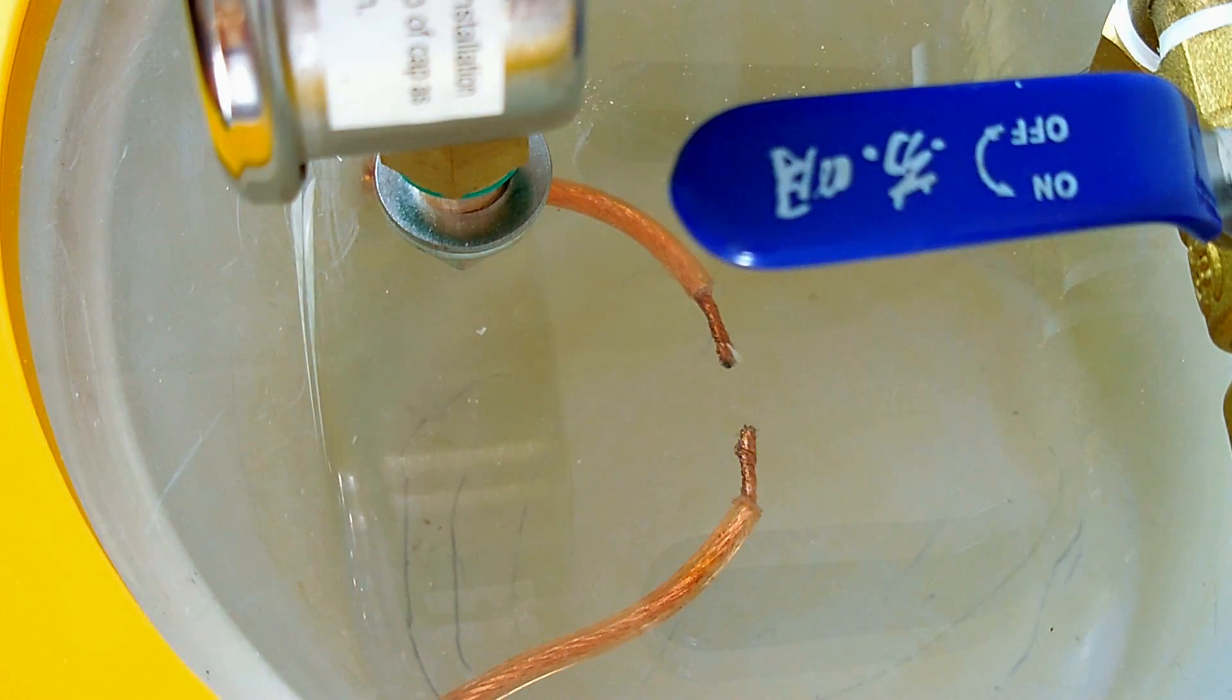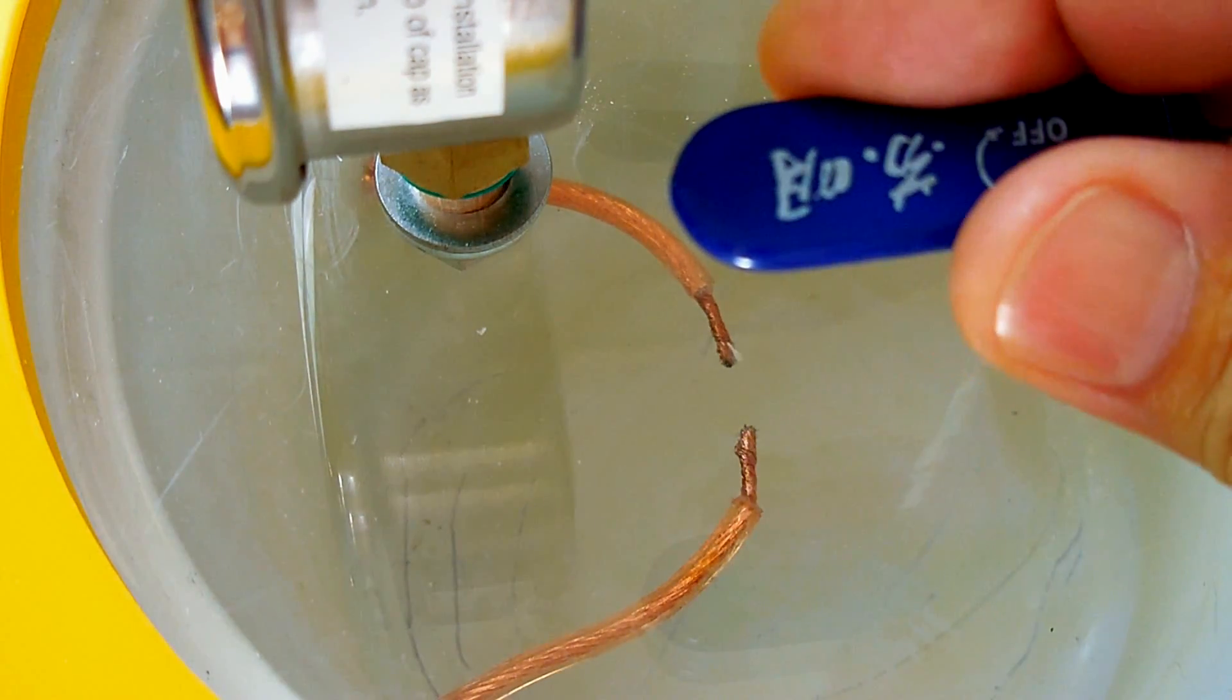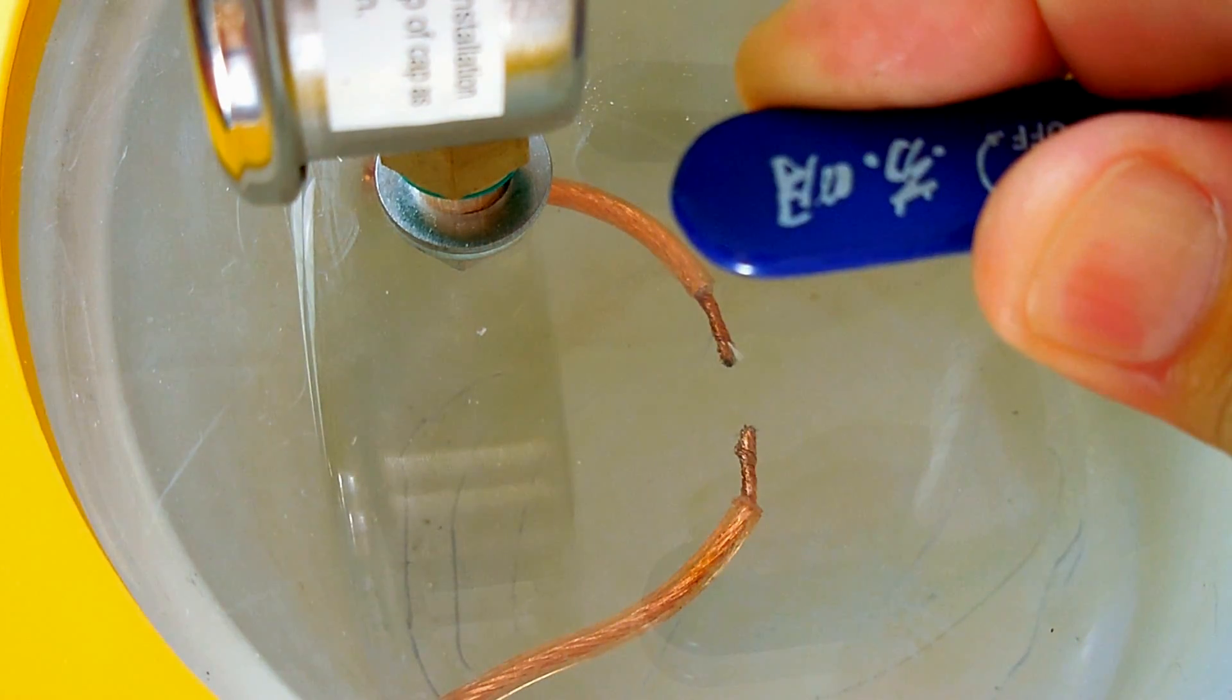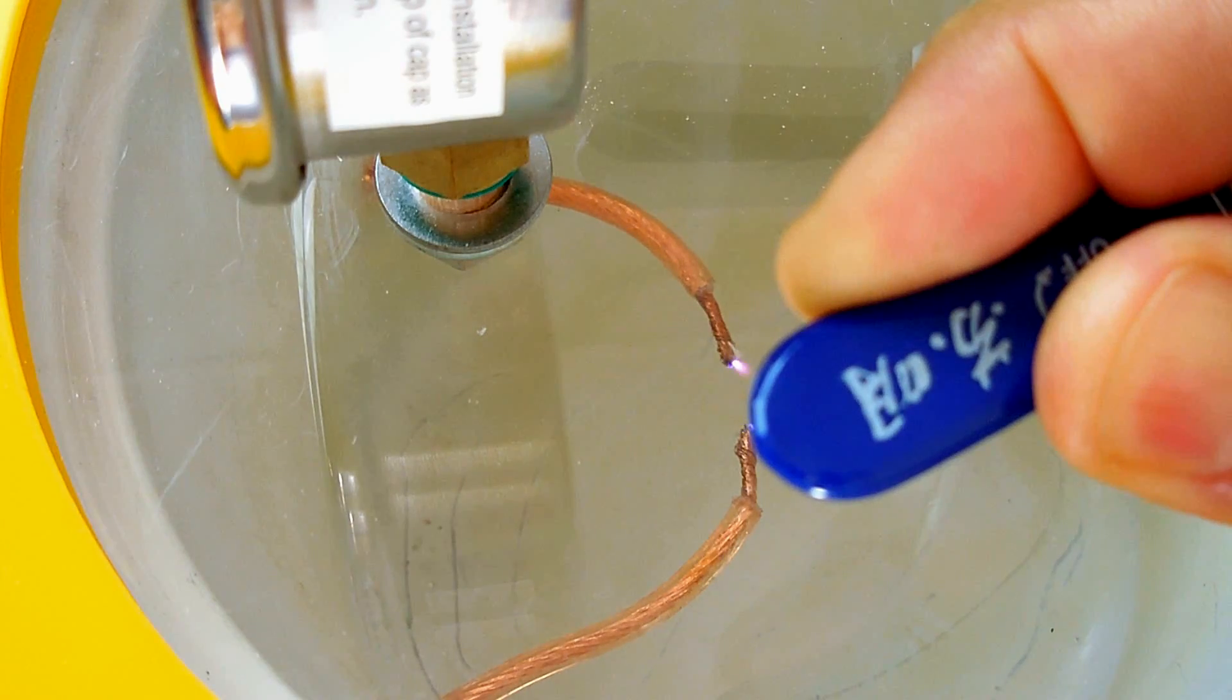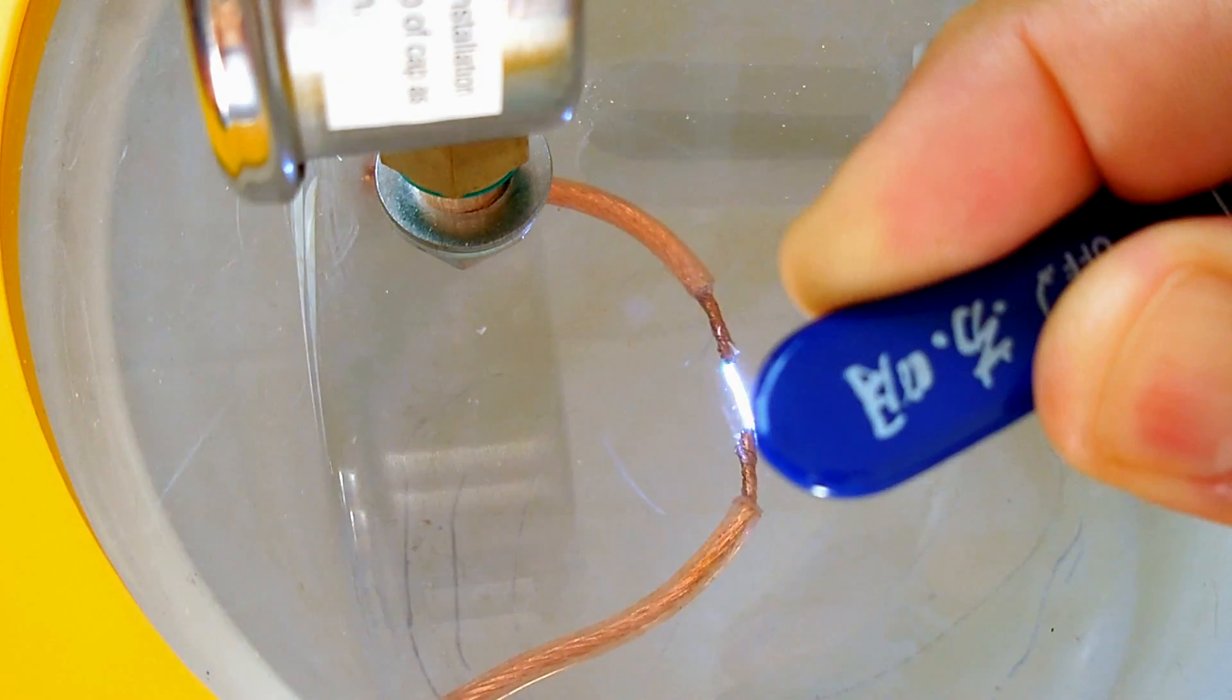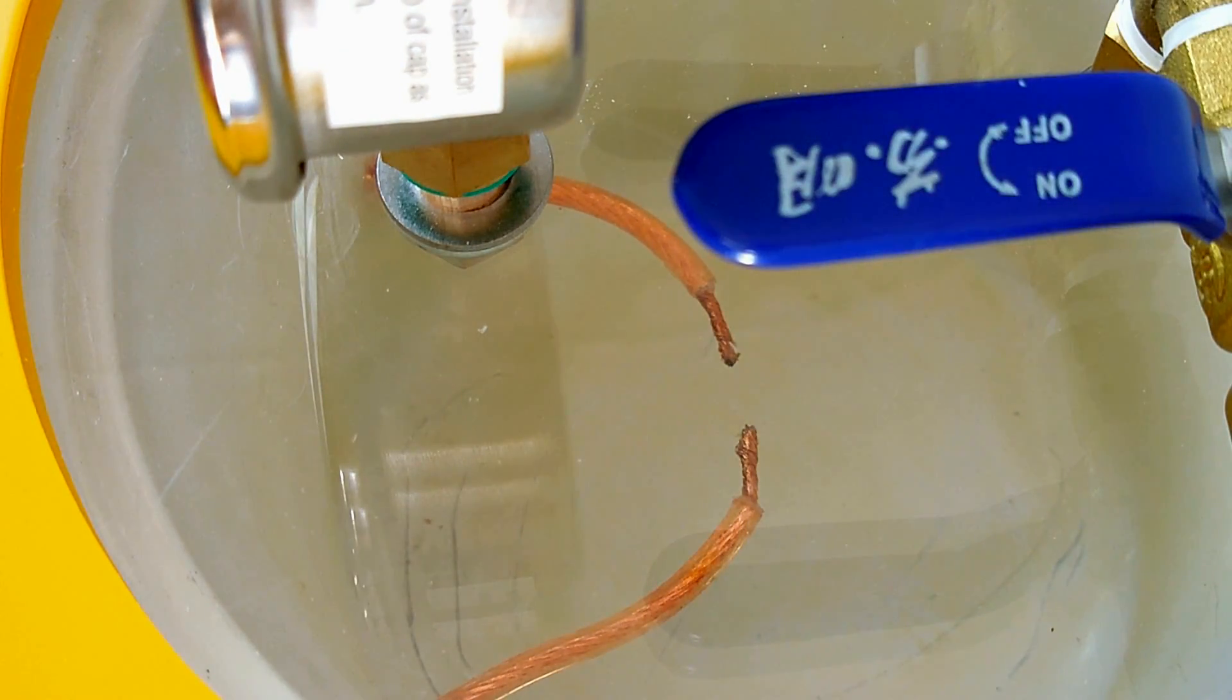Now I'm going to allow a little bit of air to enter the chamber. Right now we're at negative 30 inches of mercury. Let me gradually let it go and we'll see when it starts to arc between the two points. Let me just let a little bit in. There you go. That's negative 23 inches of mercury, and you can hear it even sounds different.